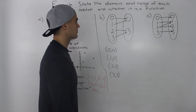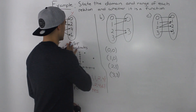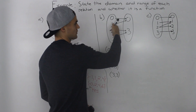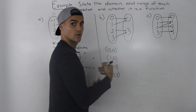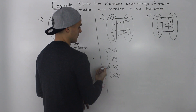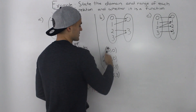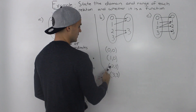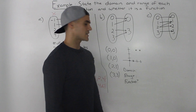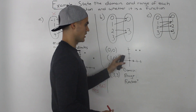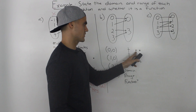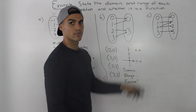Moving on to part B. The number of arrows equals the number of coordinates: one, two, three, four. So we're dealing with four coordinates: zero and zero, one and zero, two and three, and three and three. Taking this list of coordinates and plotting them on a graph, we have zero-zero, one and zero, two and three, and three and three.